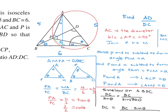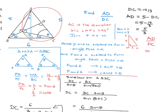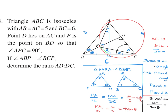With DC equals 10/3 and AC equals 5, AD equals AC minus DC equals 5 minus 10/3 equals 5/3. Therefore AD over DC equals (5/3) over (10/3) equals 1/2. The answer is 1/2.